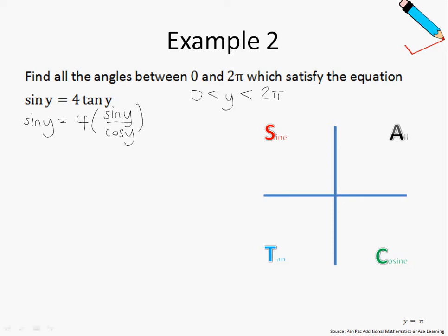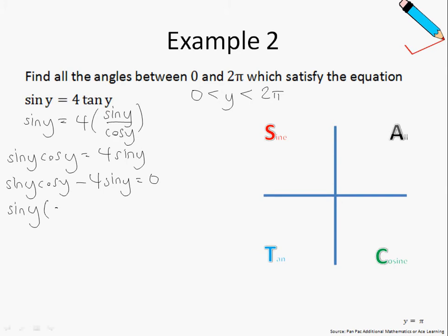Multiplying both sides of the equation by cos y, I will get sin y · cos y equals 4 sin y. Shifting all expressions to the left-hand side, I get sin y · cos y minus 4 sin y. Factorizing out sin y, I get the factorized equation, meaning we have two scenarios: sin y = 0, or cos y = 4.